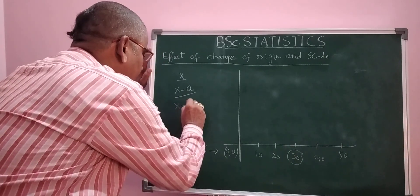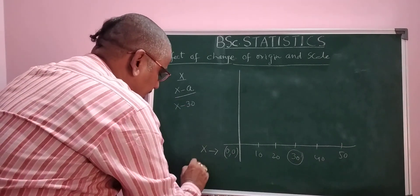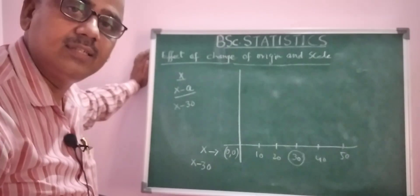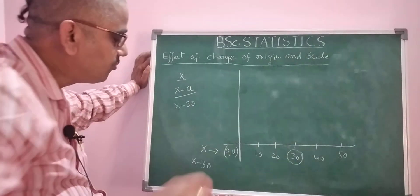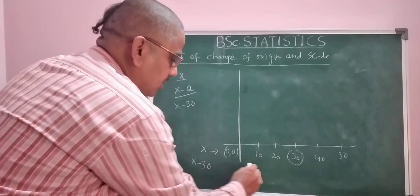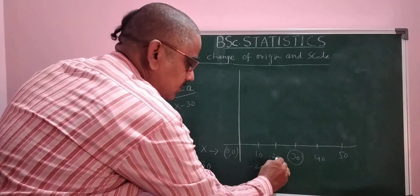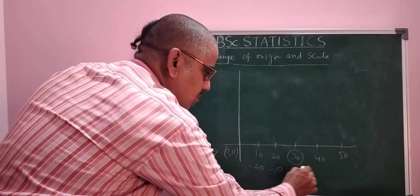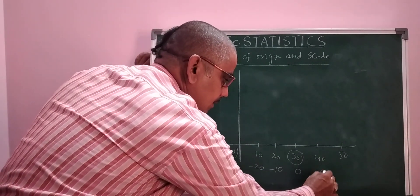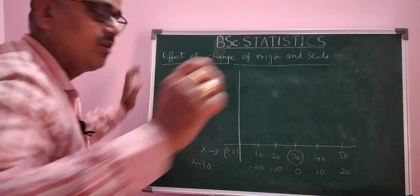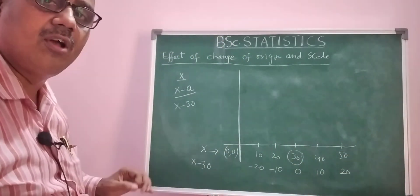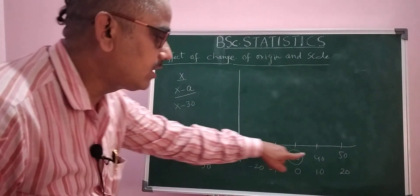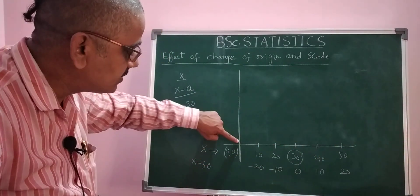Calculating x minus 30 for each value: 10 minus 30 is minus 20; 20 minus 30 is minus 10; 30 minus 30 is 0; 40 minus 30 is 10; 50 minus 30 is 20. Now if you observe, for the original values 10, 20, 30, 40, 50, the origin is here at 0.